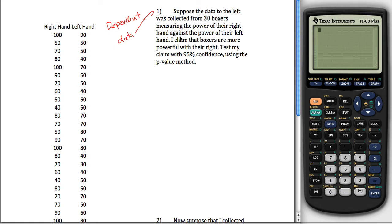It says, suppose that all this data was collected from 30 boxers measuring the power of their right hand against the power of their left hand. This is one boxer right here up top, and you got a score of 100 with his right and 90 with his left. This is another boxer. We've got 50 with each hand, and I claim that the boxers are more powerful with their right. I want to test that claim with 95% confidence, and I want to use the p-value method.